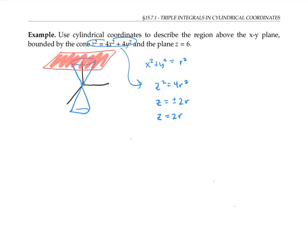That means that for the inside of the region, z is greater than or equal to 2r, that's what it is equal to when it's on the cone. And z is less than or equal to six, since that's what it is when it's on the plane.